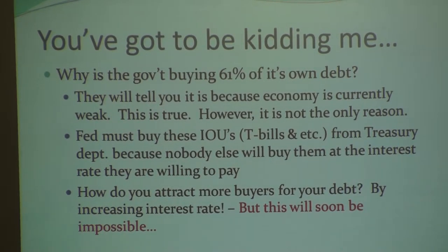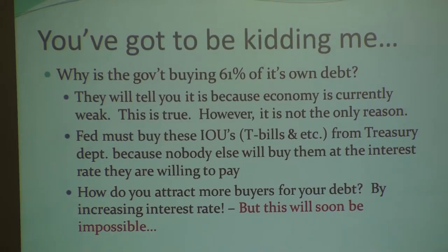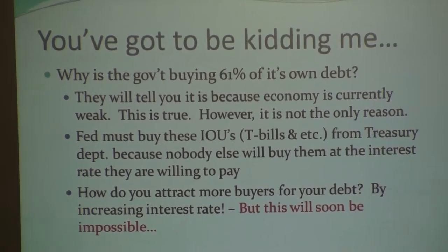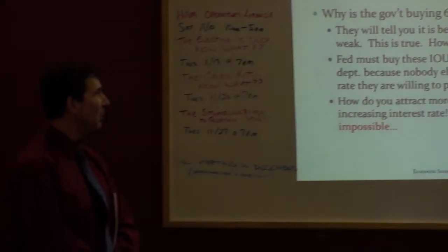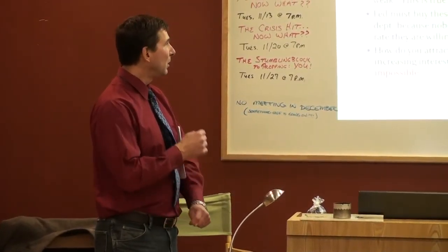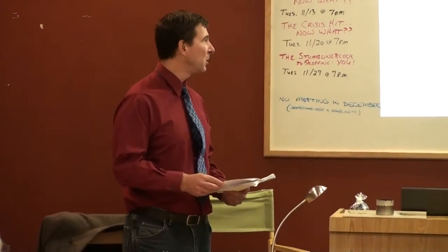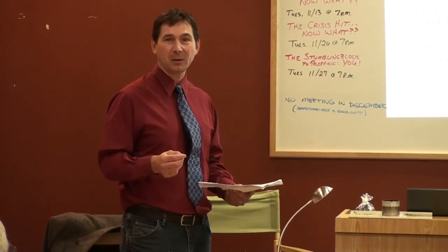Why is the government buying 61 percent of its own debt? On the news they hide it behind 'quantitative easing' and say they're putting pressure on the Fed to ease policy so the economy can recover. Private industry loves it when the government prints money because it makes stock prices go up. But the real reason — the one they don't tell you — is that the Fed has to buy these T-bills because nobody else will buy them at the interest rate being offered.